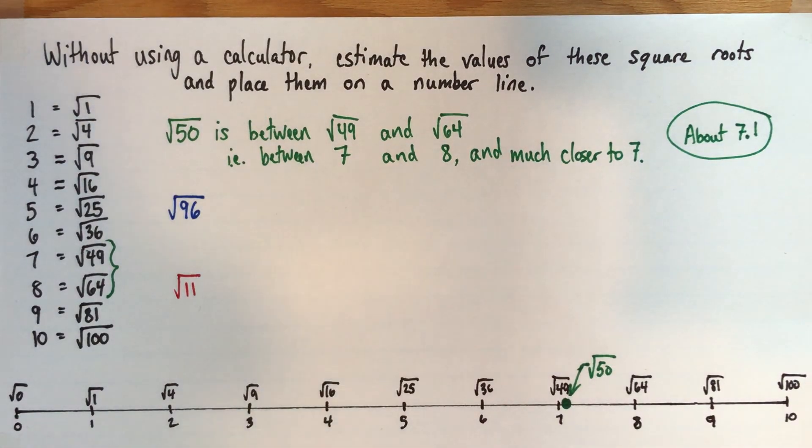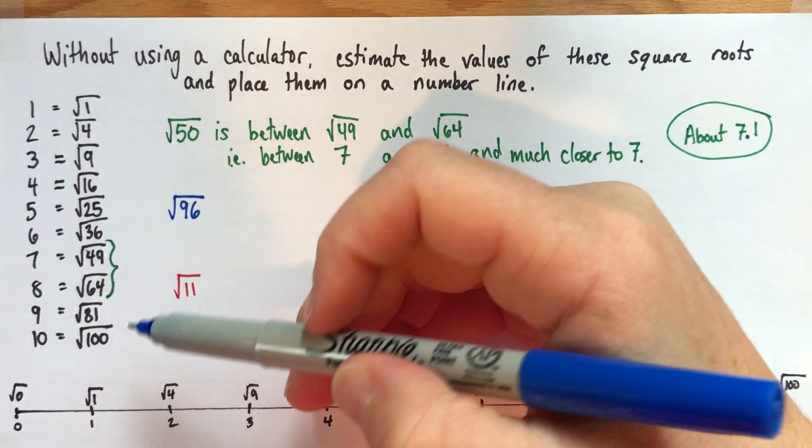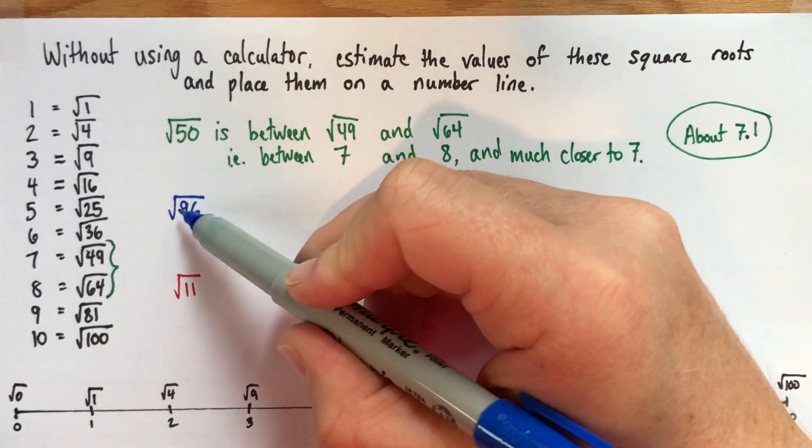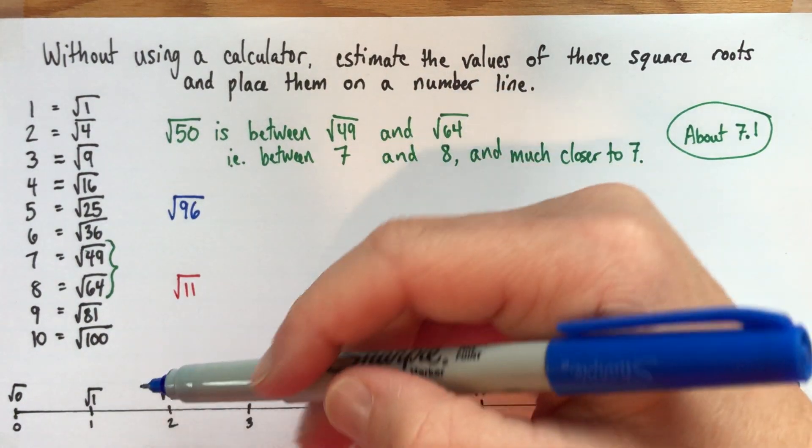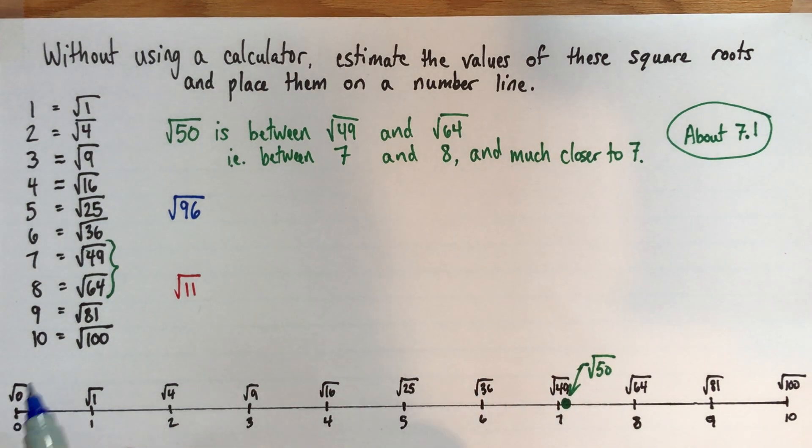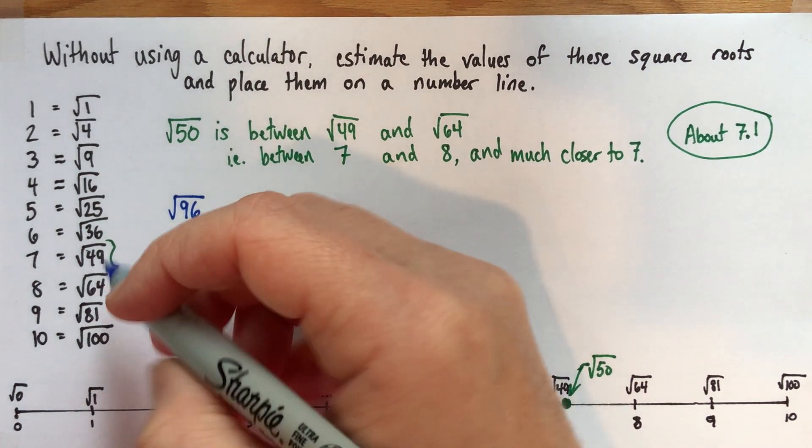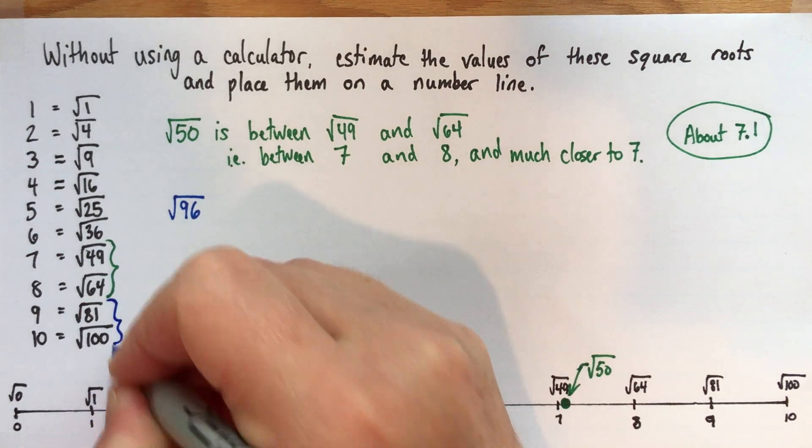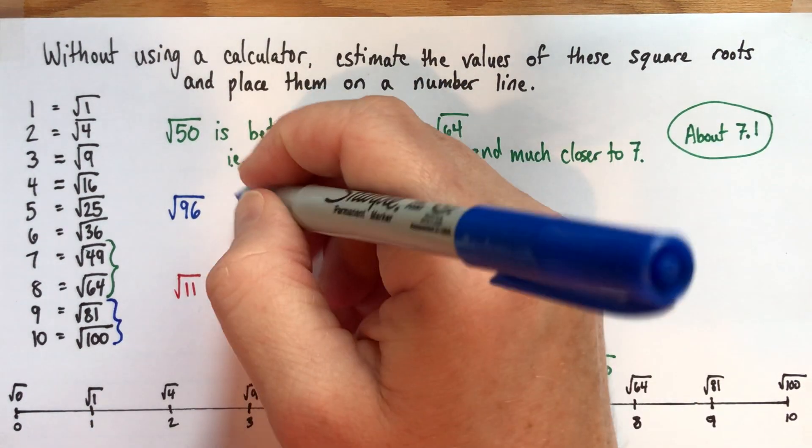All right, next example, let's look at the root 96. So I'm going to start again. I'm going to compare to the square roots that I know, and I'm going to try to figure out what is this between of the ones that I know. And here, okay, so 96 is between 81 and 100. So root 96 is between 9 and 10. Let's write that down.